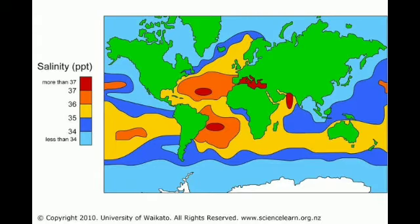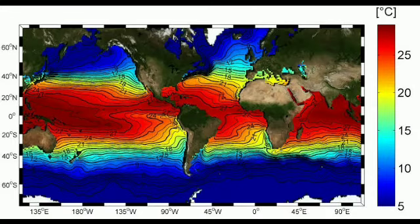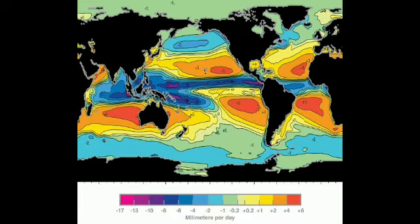The North Equatorial Current originates in the western coast of Mexico and flows in a westerly direction. It reaches the Philippines after traveling 7,500 nautical miles. After reaching the coast of the Philippines, under the impact of the Coriolis force, it takes a northerly direction. The South Equatorial Current originates to the west of Peru at 10 degrees south latitude, and is one of the strongest currents.